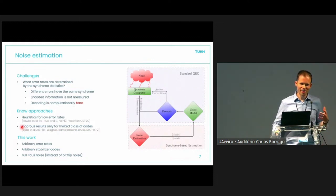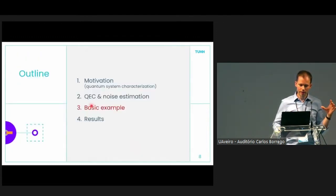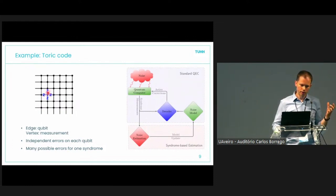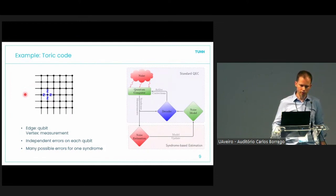The second part of my talk is quite technical, but what I'm going to say is very similar to a basic example I can explain on one slide for the Toric code. In the Toric code, we have star-shaped operators where the qubits sit on the edges, and Z-stabilizers composed of three Z-operators. I'll assume independent Pauli errors on each qubit, just to make life easier for the example.